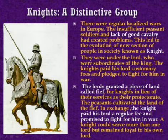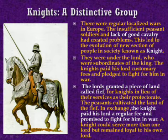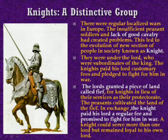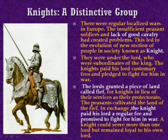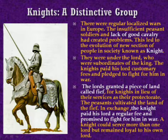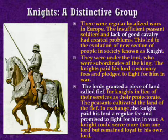During the medieval period and the feudal society, we also see the emergence of a different group known as knights. There were regular localised wars in Europe in medieval times. Insufficient peasants were forced to become soldiers, and due to lack of good cavalry, it created various problems for the nobles and kings to defend themselves. This led to the evolution of a new section of people in society known as knights. They were under the lord, who were subordinate to the king, and the knights paid their lord customary fees and pledged to fight for him in war.